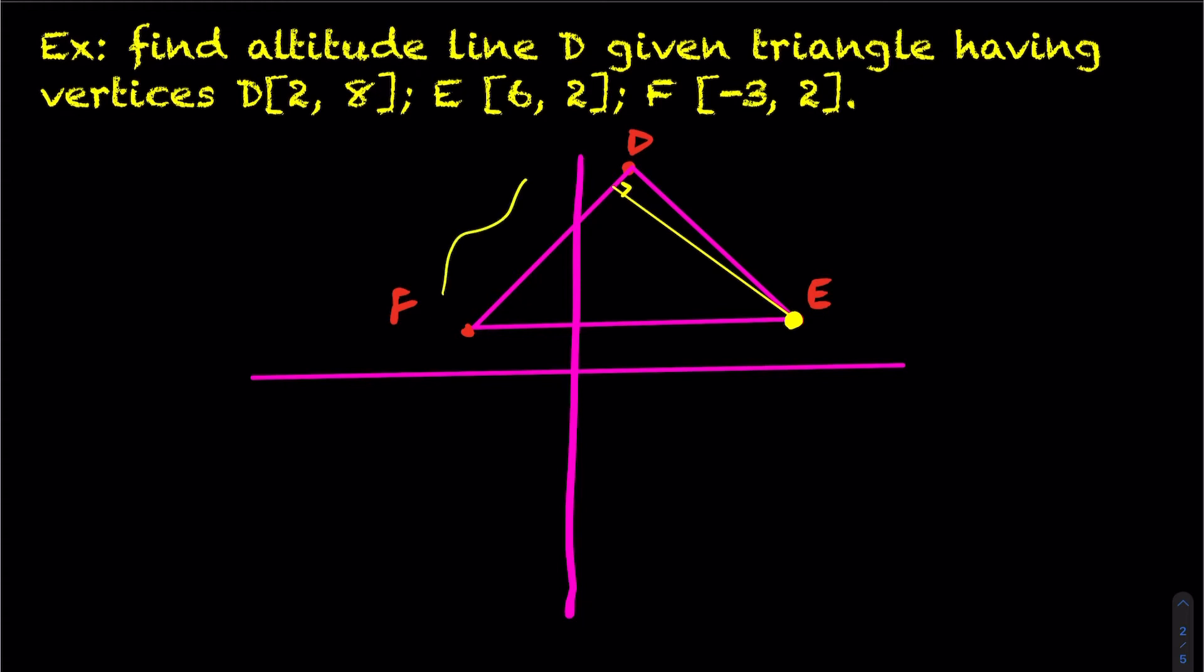So I want to find the equation of this line here. So what do I know? Well, I know the slope of my altitude line E is perpendicular to line segment FD. So I'm going to calculate the slope of FD. So therefore, this will be x1, y1, and this will be x2, y2. Order doesn't matter.